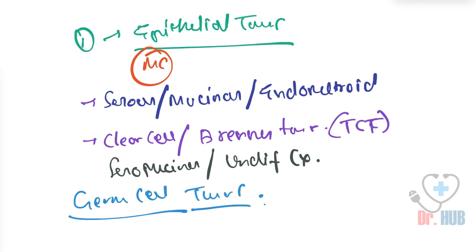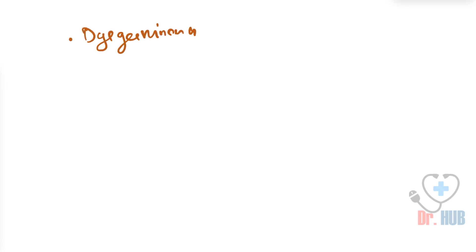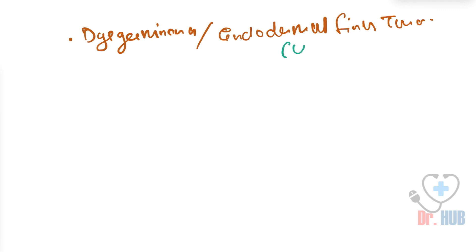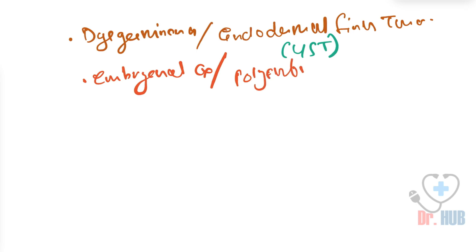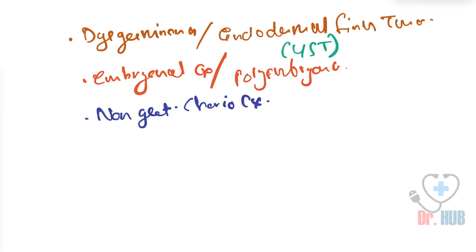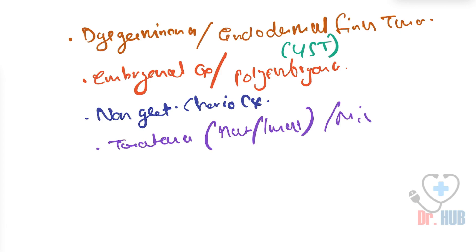Next we look at the germ cell tumors — this was the second question. Under germ cell tumors: the dysgerminoma, the endodermal sinus tumor (also known as the yolk sac tumor), embryonal carcinoma, polyembryoma, non-gestational choriocarcinoma, teratoma — which can be mature or immature — and the mixed forms.